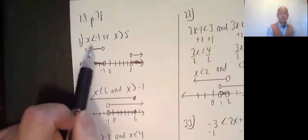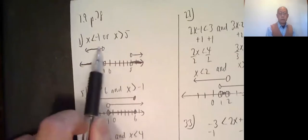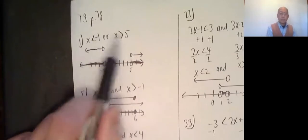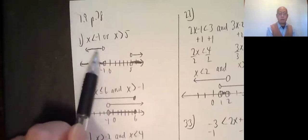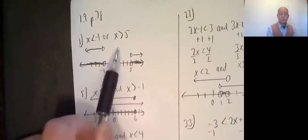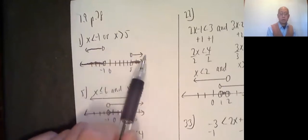Okay, number 1, x is less than negative 1 or x is greater than 5. I draw my number line, and then above, I draw each of these separately. X is less than negative 1 means open circle here, draw to the left. Then below that, x is greater than 5, open circle, continue to the right.